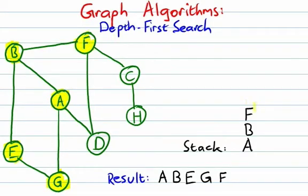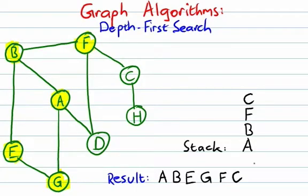Now at the top of the stack we have F. We've already been to B, but we haven't been to either C or D. So we visit the lowest alphabetically, which is C. We push it onto the stack, visit it, and mark it as visited.